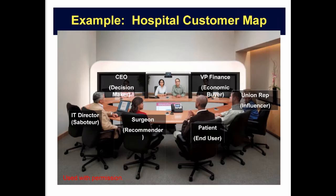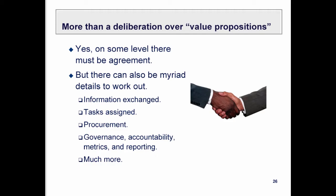When you see people gathered around the table, they're deliberating over value propositions but also exchanging information about logistics, accountability, and how the use of a therapy will be tracked. There's an expectation from everyone at the table that it's easier for you to work this out and have it adopted by 5,000 hospitals than it is for each of the 5,000 hospitals to work it out individually with Blue Cross Blue Shield on their own.